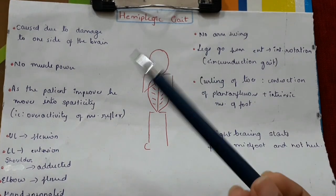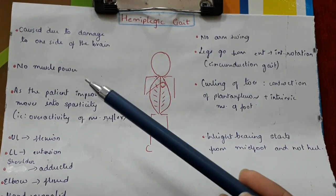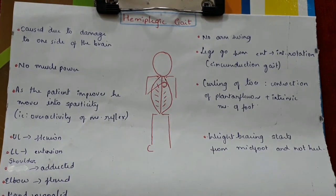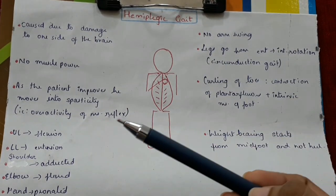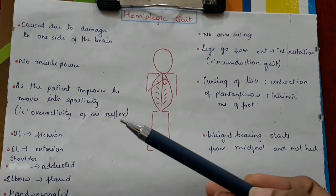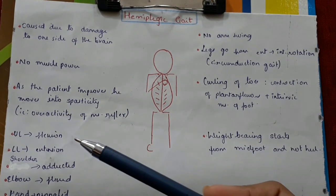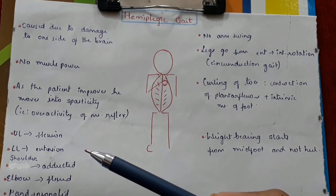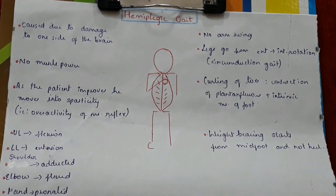Hemiplegic gait is caused due to damage to one side of the brain. There is initially no muscle power, and as the patient improves, they move into spasticity — that is, overactivity of muscle reflex. The upper limb moves into flexion, the lower limb into extension, and the shoulders are adducted.